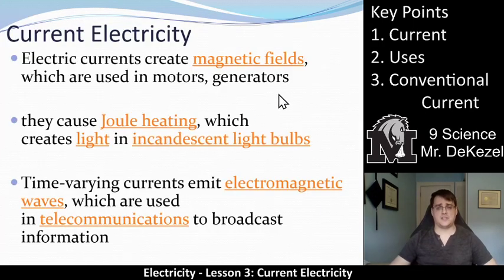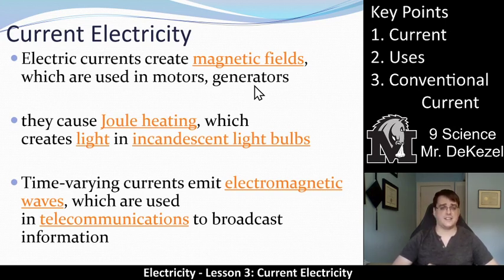Some uses. Key point two for current electricity. Current electricity creates magnetic fields, which are used in motors and in generators to make electricity stored for later. Electricity causes joule heating. It causes light in light bulbs. It causes your element to get hot on your stove or even your oven, if you have an element oven to get hot. It is very important for cooking, joule heating.